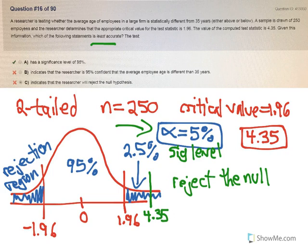B is not the correct answer, because it says it indicates that the researcher is 95% confident that the average employee age is different than 35 years. That doesn't really even make sense either way. 95% confident that it's different. That's not correct, but it's not the least accurate.